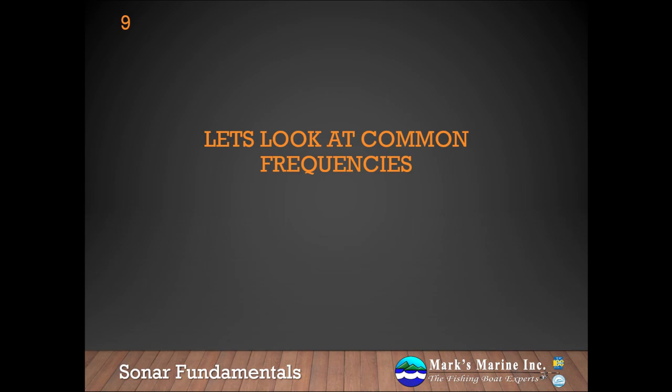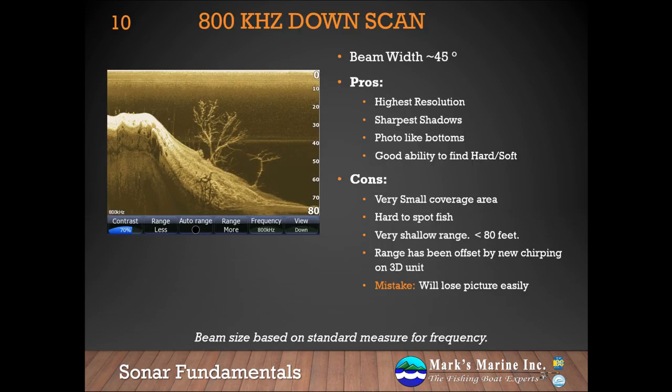Let's look at some of the common structure scan frequencies, starting with the 800 kilohertz downscan beam. These beam sizes are based on standard measurements for the frequencies. At 800 kilohertz, we have an approximately 45-degree beam width. The pros are very high resolution, very sharp shadows, and a photo-like bottom. The disadvantages are a smaller coverage area and a very shallow range because of the higher frequency.